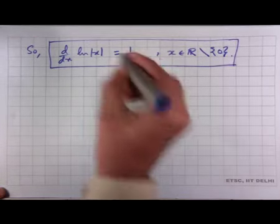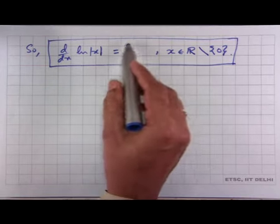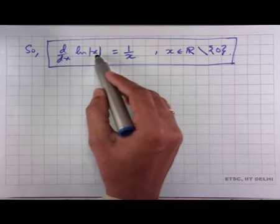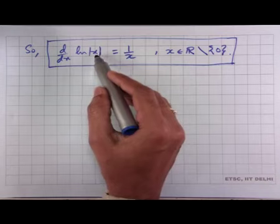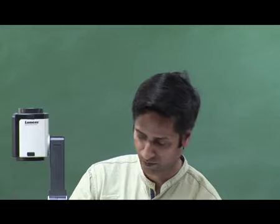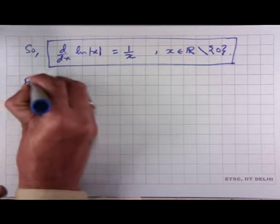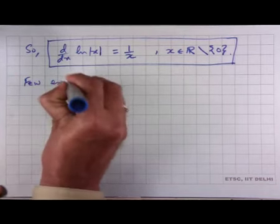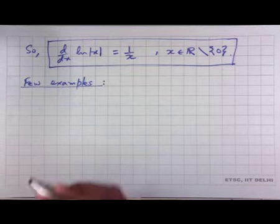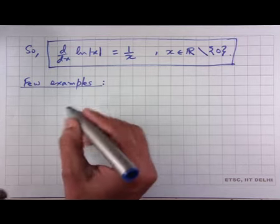When you learn about antiderivatives or the indefinite integral, you will see that the antiderivative of 1/x is written as ln|x| and not just ln(x). Now let us look at a few examples since we know the derivative of ln(x).